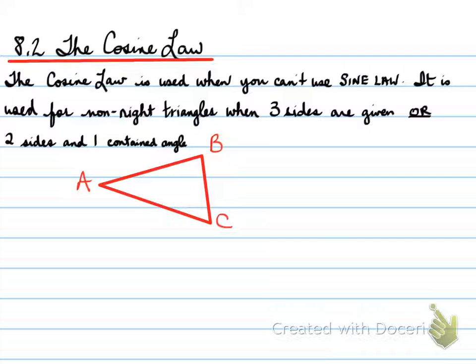So I'll show you what that means. If I'm given for example side A and side C the contained angle between A and C is angle B. So that explains that right there.